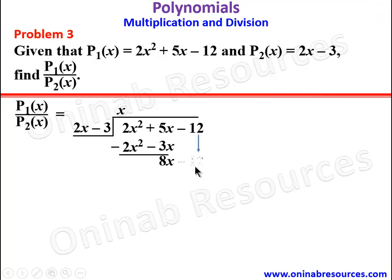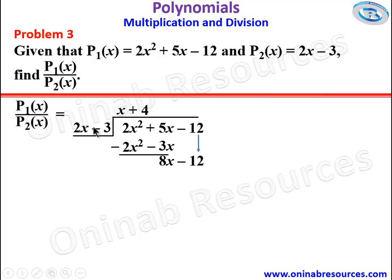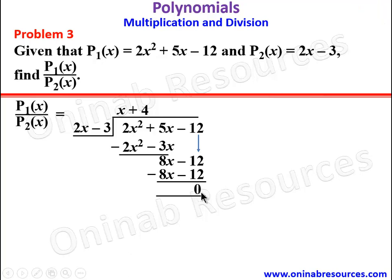Then we bring down the negative 12, and that is our new dividend. We concentrate on 8x and 2x: 8x divided by 2x gives positive 4. So we have plus 4 there. We use this 4 to multiply every term of the divisor. 4 times 2x gives 8x. 4 times negative 3 gives negative 12. We subtract, and we have 0. So we are done dividing.